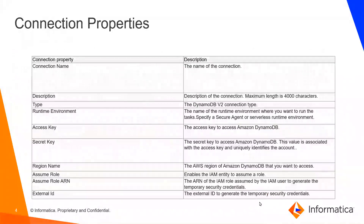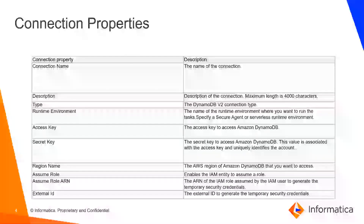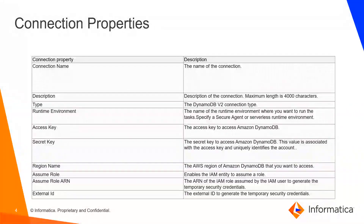These are the DynamoDB connection properties. For connection name, you can give any name. Description is optional. Then for type, the type here will be DynamoDB P2 connection. You need to enable the DynamoDB P2 connector in the runtime environment.